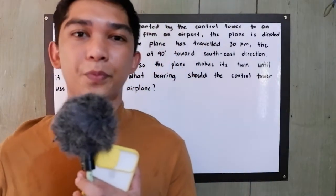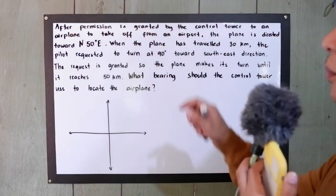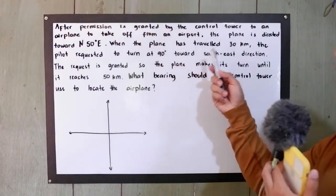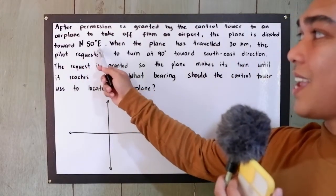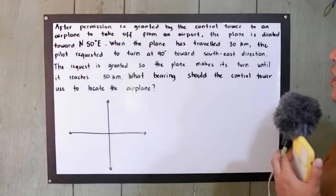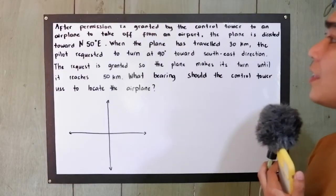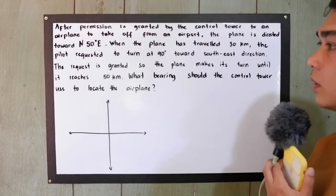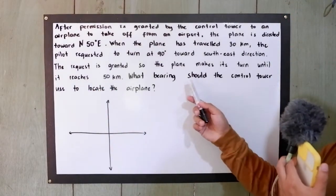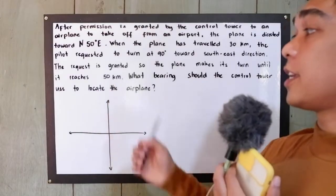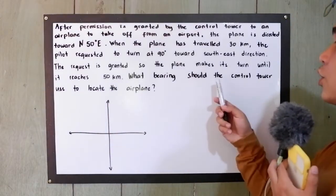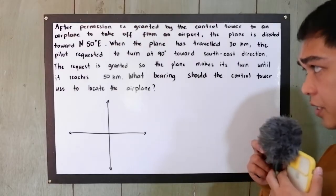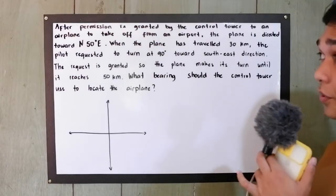Now let's have example number two. After permission is granted by the control tower, an airplane takes off from an airport directed toward 50 degrees east of north. When the plane has traveled 30 kilometers, the pilot requested to turn at 90 degrees toward the southeast direction. The request is granted and the plane travels until it reaches 50 kilometers. What bearing should the control tower use to locate the airplane? Let us first illustrate the problem.